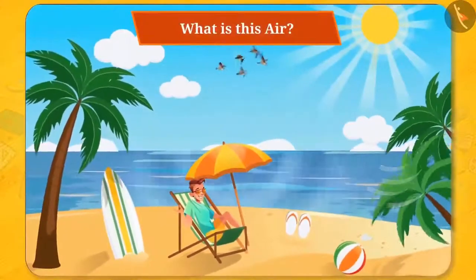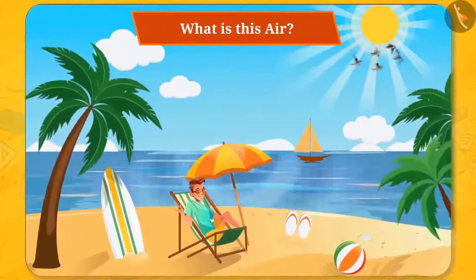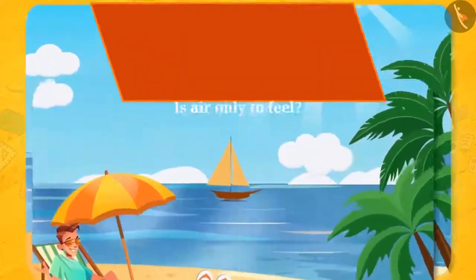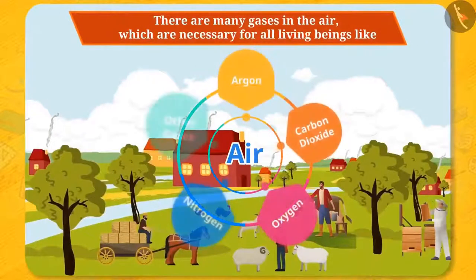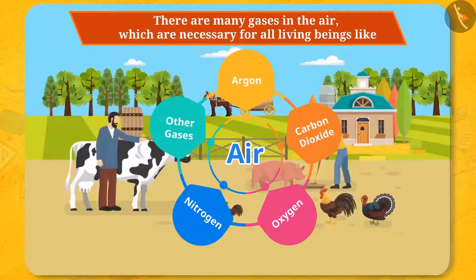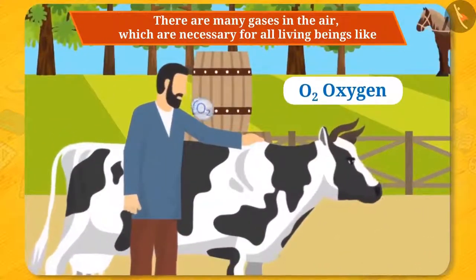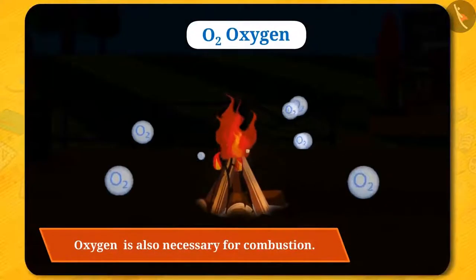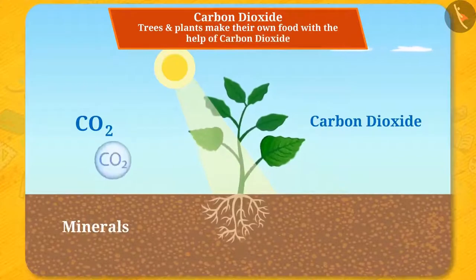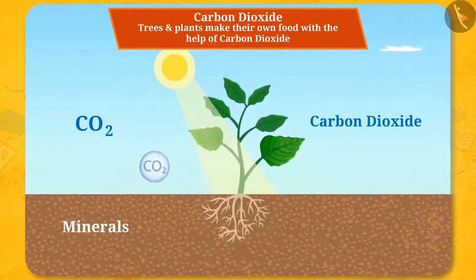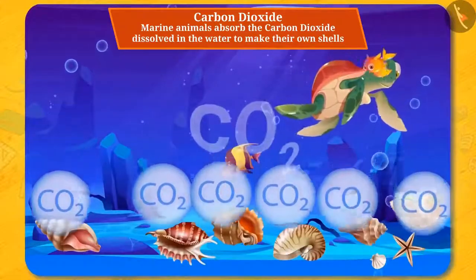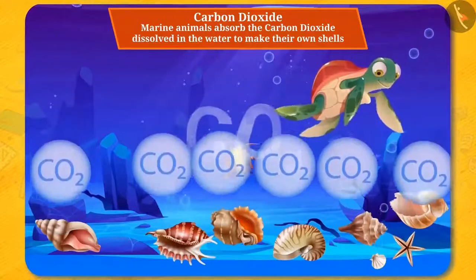What is this air? Can you see it? No, but yes, you can feel it. Is air only to feel or is there any other importance of air as well? Yes, there are many gases in the air which are necessary for all living beings — like oxygen, which is necessary for respiration of living beings and also for combustion, and carbon dioxide. Trees and plants make their own food with the help of carbon dioxide, and marine animals also absorb the carbon dioxide dissolved in water to make their own shells.